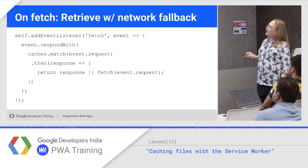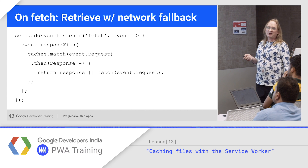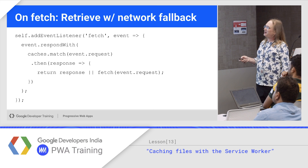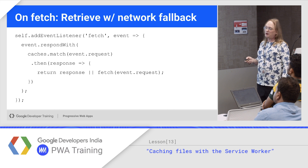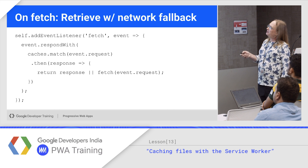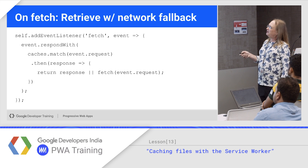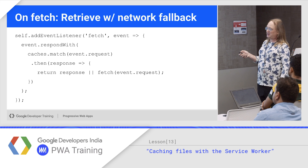With network fallback, grab it from the cache and get it from the network if you can't. This is what the code typically looks like — match, get the response. If you have the response, return it; if not, do a fresh fetch. Easy.